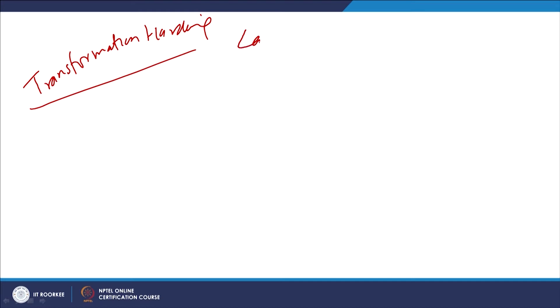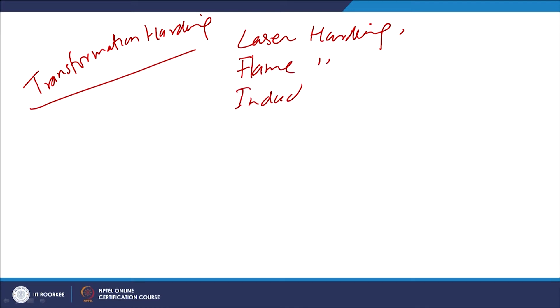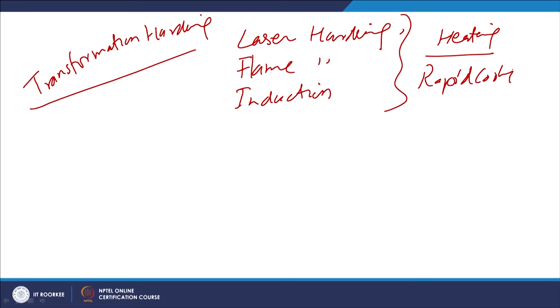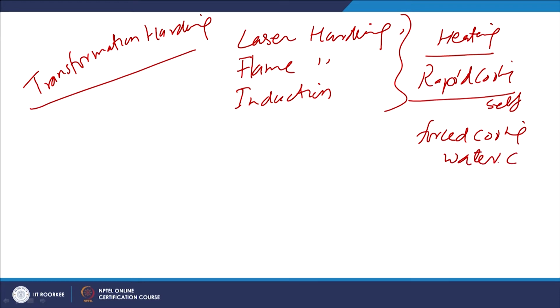There are three very commonly used transformation hardening methods: laser hardening, flame hardening, and induction hardening. All these methods follow the same principle, which involves controlled heating up to the required depth followed by rapid cooling. Sometimes rapid cooling happens by self-cooling with no external cooling required, but otherwise forced cooling using a water jet is also used.